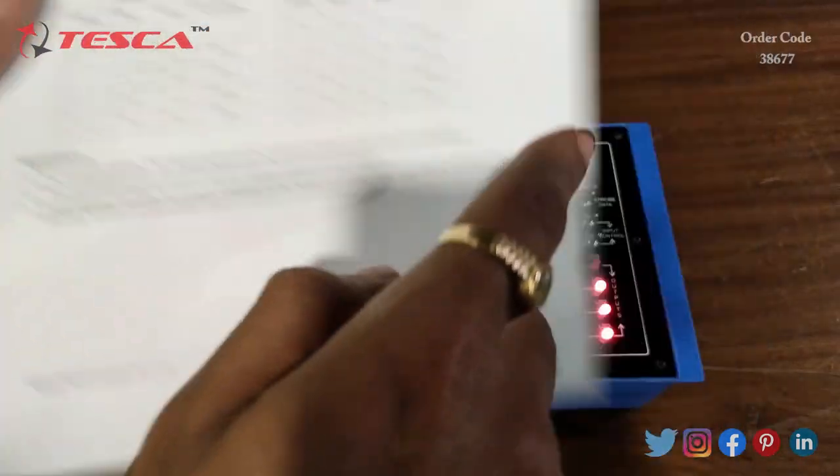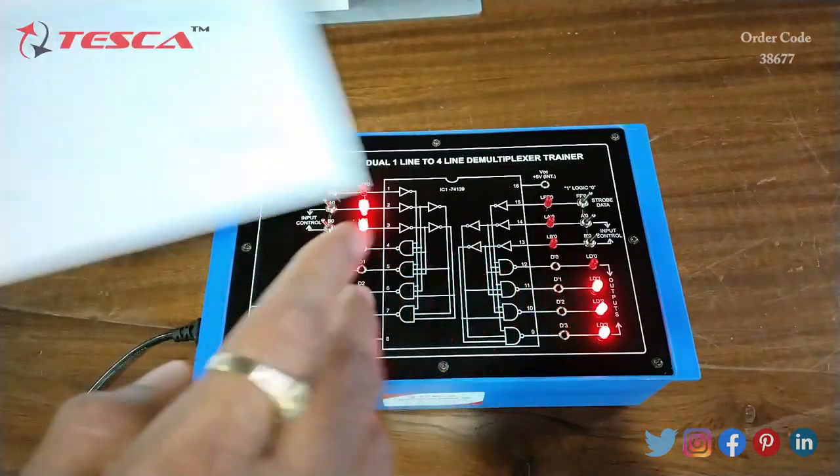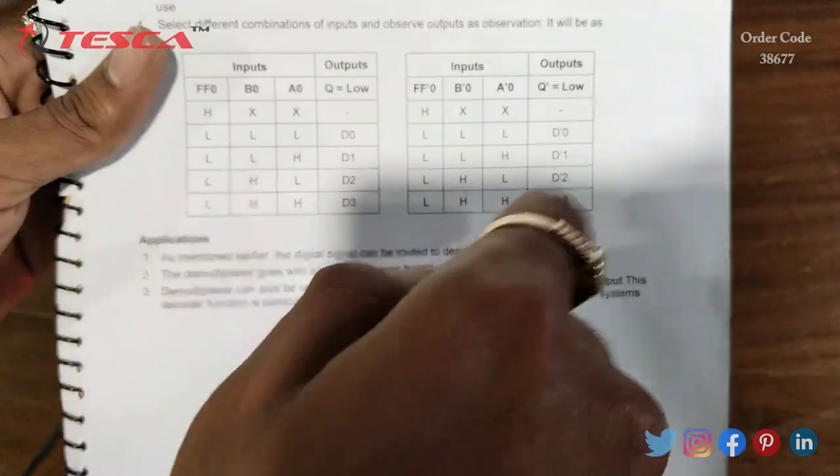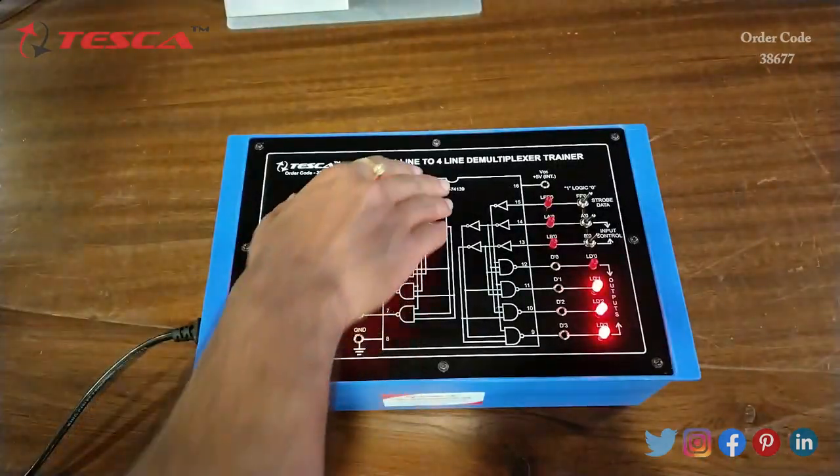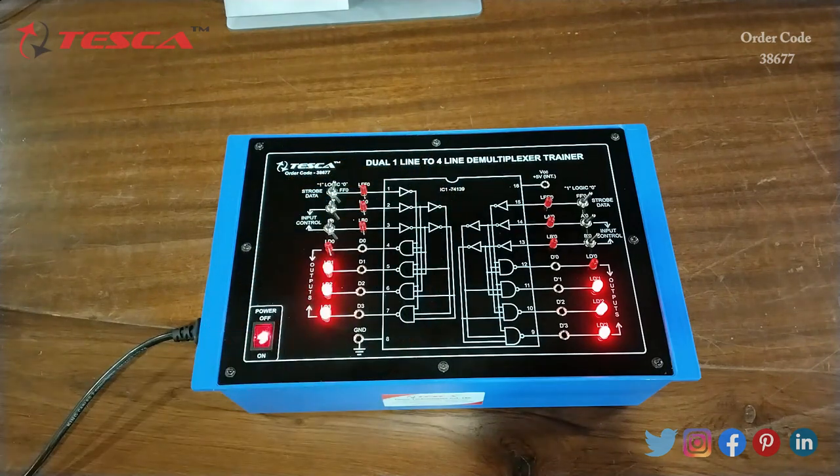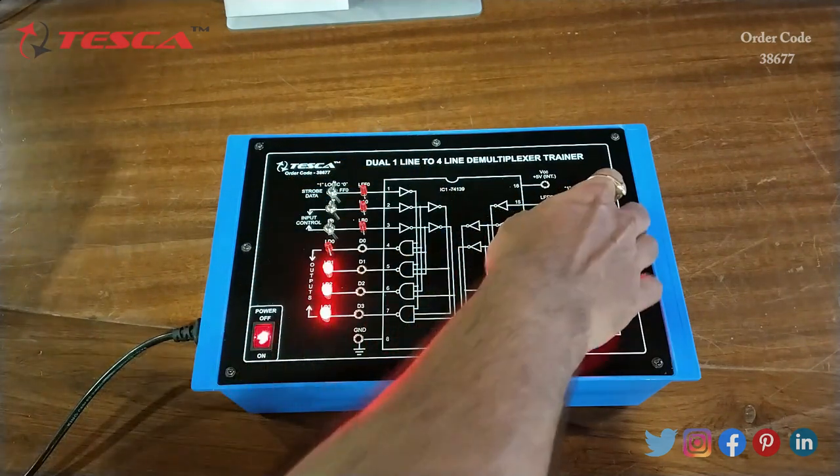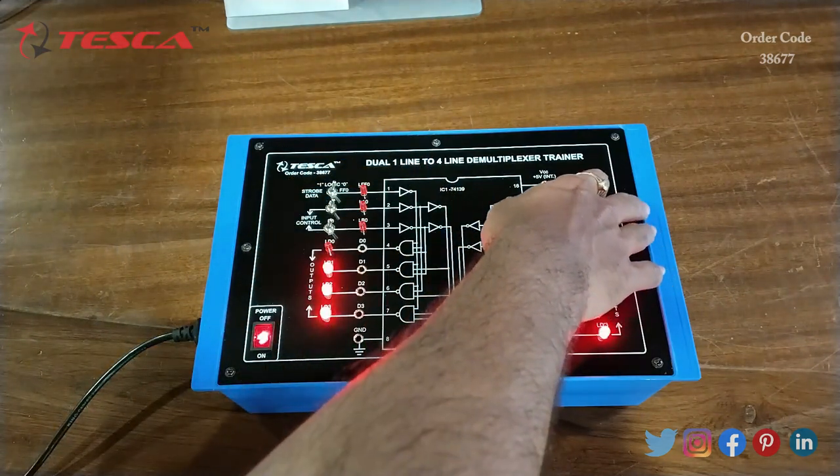Similarly we can do it with this circuit also. For that, this is the truth table. Now we will keep all these switches at 0, and first keep FF0 at high.